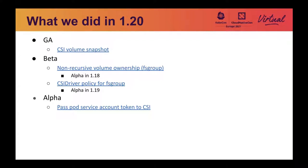In 1.20, there are also two FS group-related features that moved to beta. The first one is non-recursive volume ownership. This feature allows users to skip recursive permission changes when mounting a volume. Traditionally, if your pod is running as a non-root user, you must specify an FS group inside the pod's security context so that the volume can be readable and writable by the pod. However, there is a downside. Each time a volume is mounted, Kubernetes must recursively chown or change mode all the files and directories inside the volume. This can be very expensive for larger volumes with a lot of small files, causing pod startup time to be very slow.